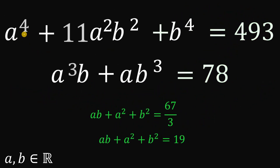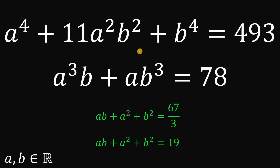Given the equations a⁴ + 11a²b² + b⁴ = 493 and a³b + ab³ = 78, the numerical values of ab + a² + b² are 67/3 or 19. And as always, we are done.